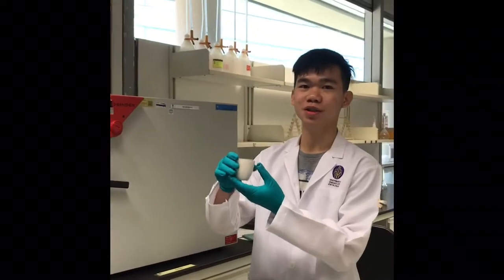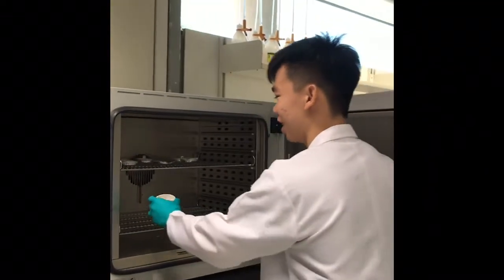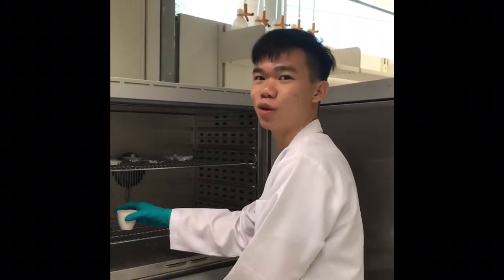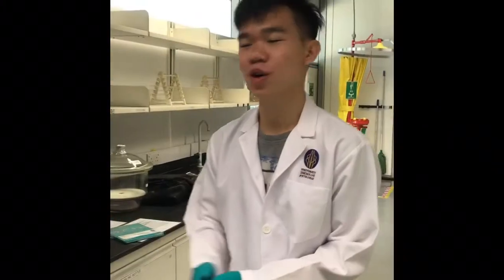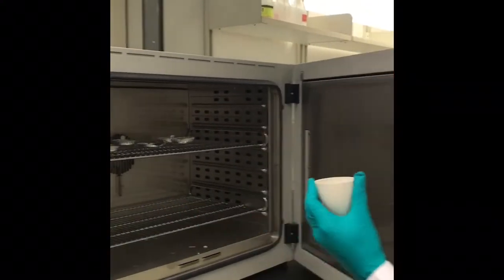Together with the samples, we put the evaporating dish into the oven and leave it at 105 degrees Celsius for 24 hours. After 24 hours, we take out the evaporating dish and we measure the mass.